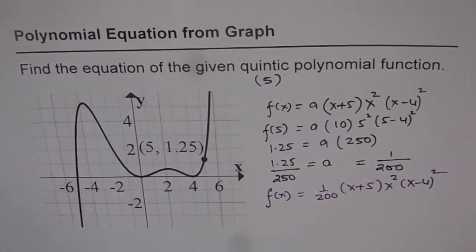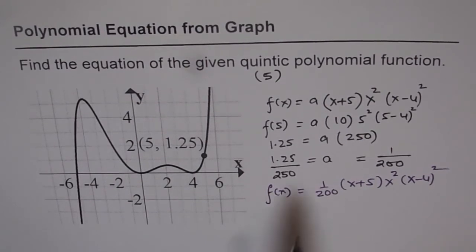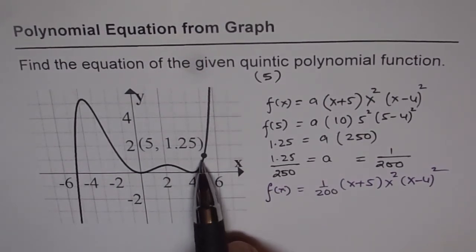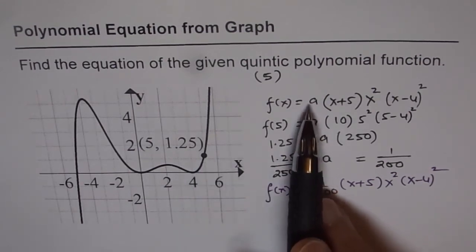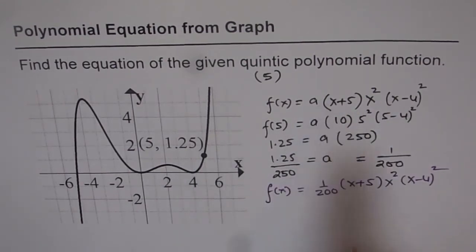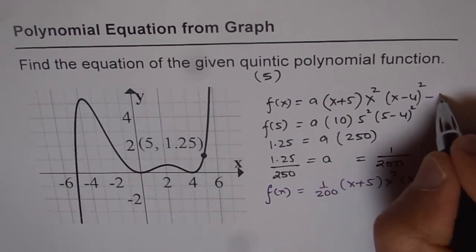So that is how you can get equation from the graph. It is kind of critical to get the value of a from the given point. If the point is not given to you then you can only write family of the function as we started with. So that is the family.